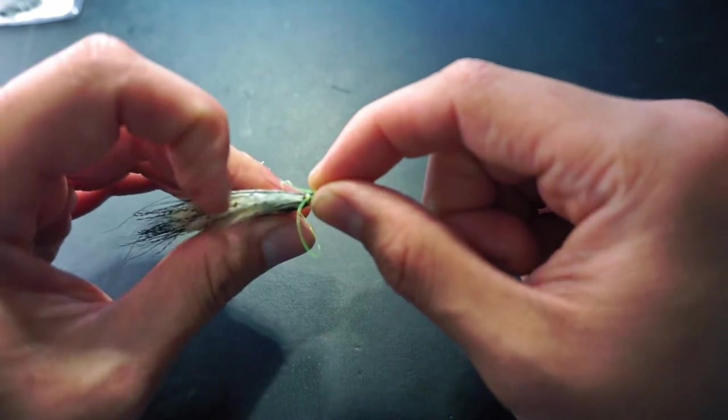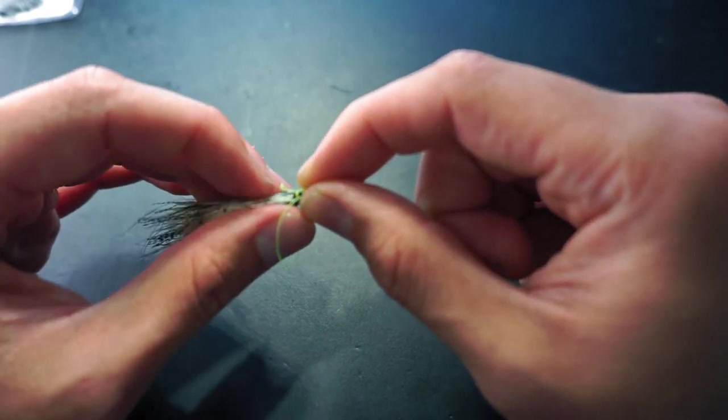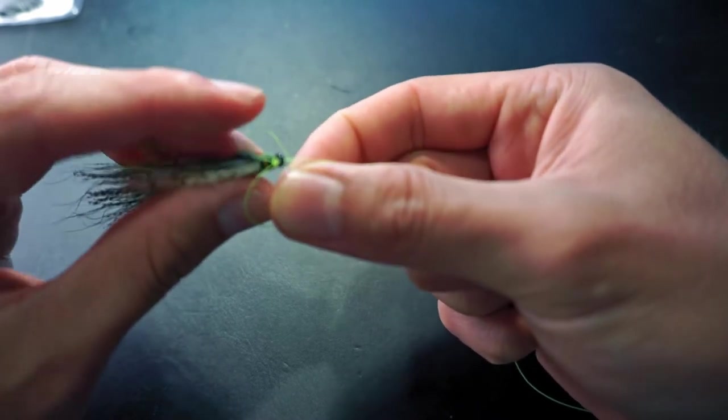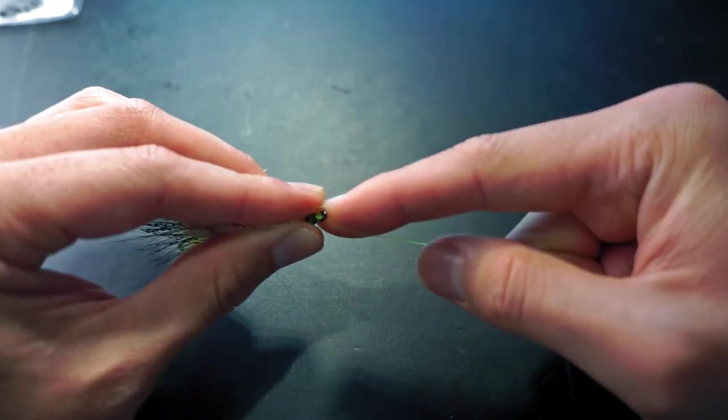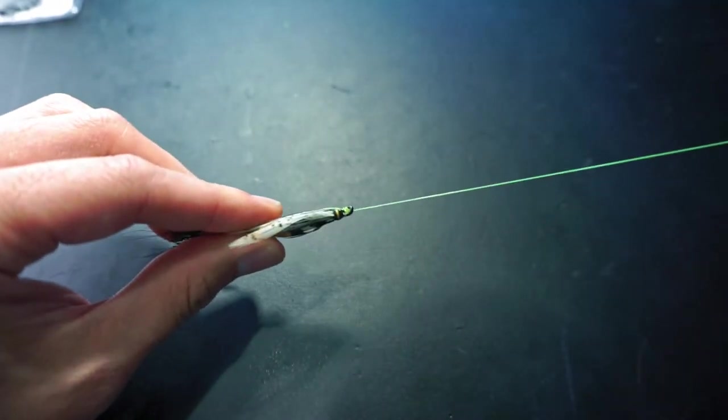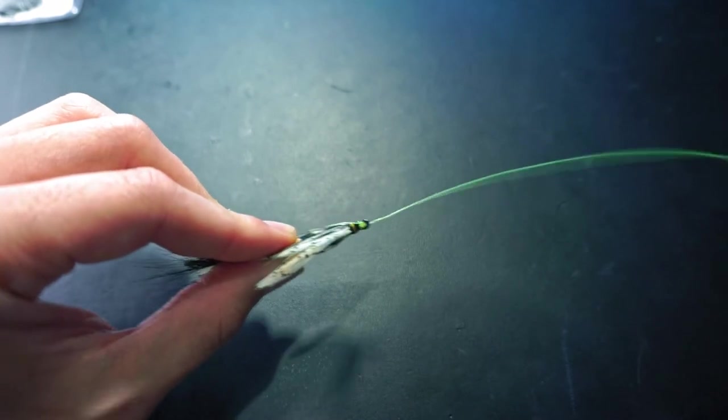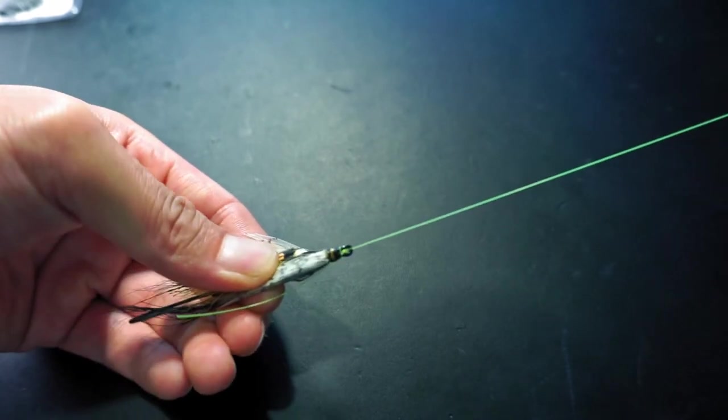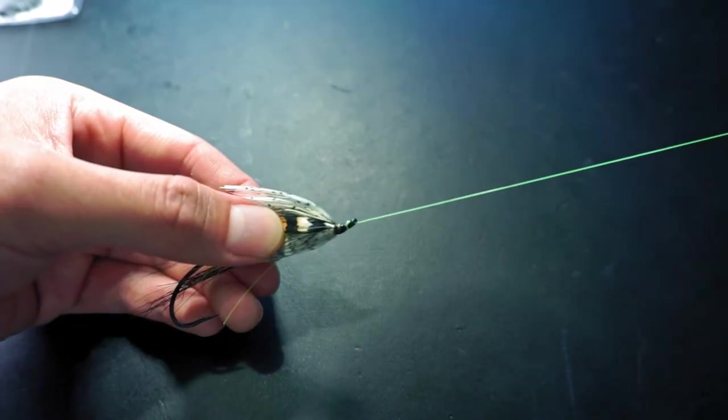And as you pull the line tight, you really want to see the noose around the eye of your fly like so. And you know that you have a good working turtle knot when you flip the fly under and you see that the line comes straight through the eye of your fly.